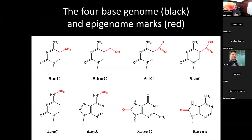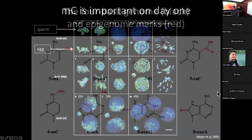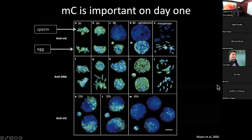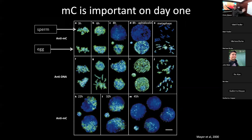One of my favorite papers from grad school shows a mouse embryo just a few hours after fertilization. You see egg and sperm at the top, with the antibody in green marking methylcytosine. You can see the sperm genome gets demethylated first — the paternal genome is reprogrammed first. Then you have a two-cell embryo and then four-cell embryos, which slowly diffuse the methylation marks through replication.